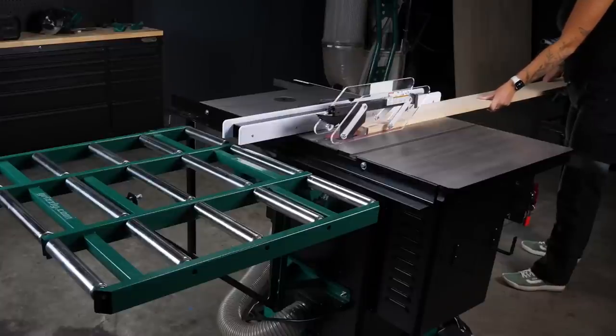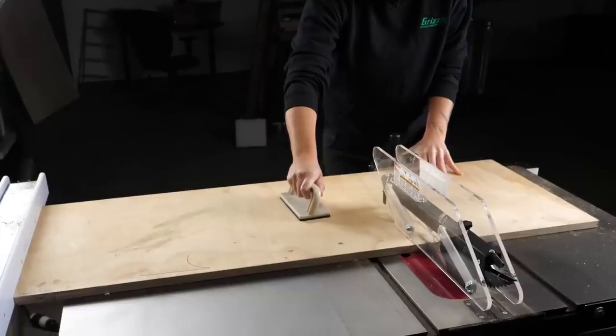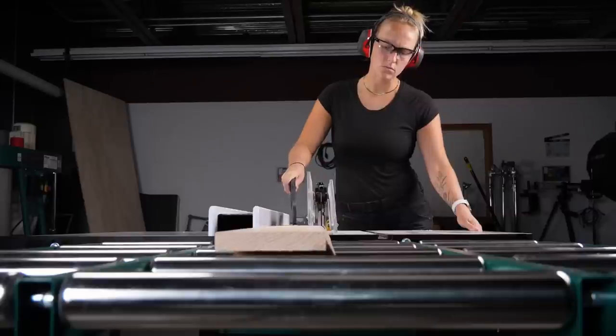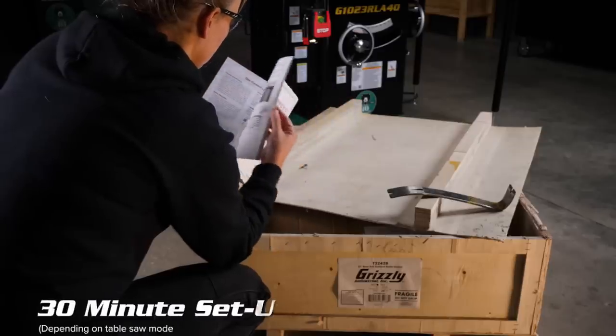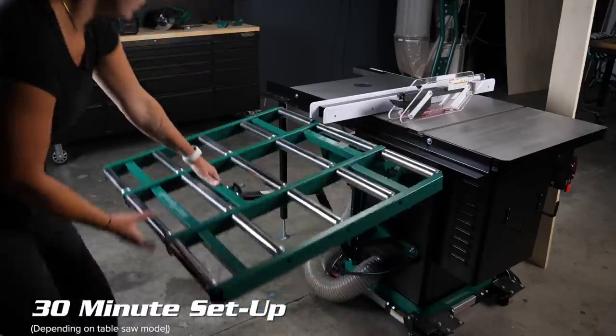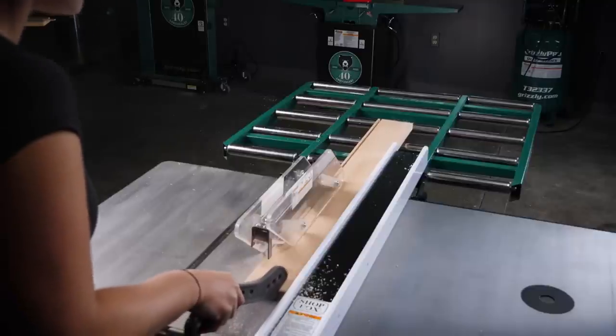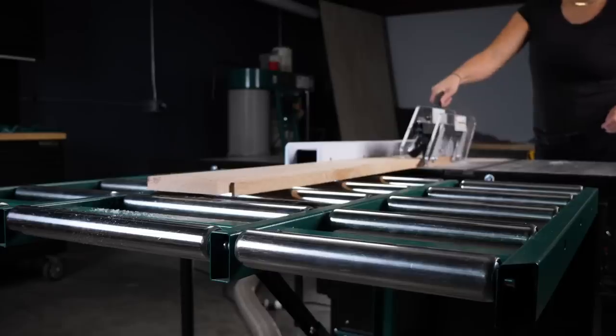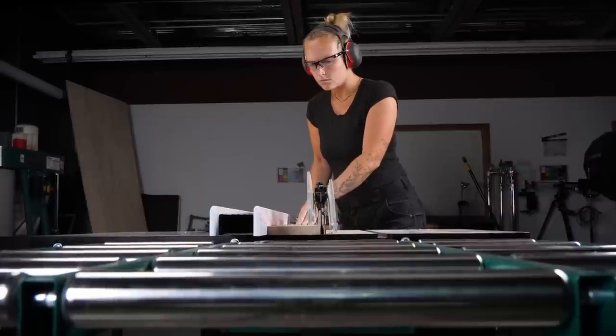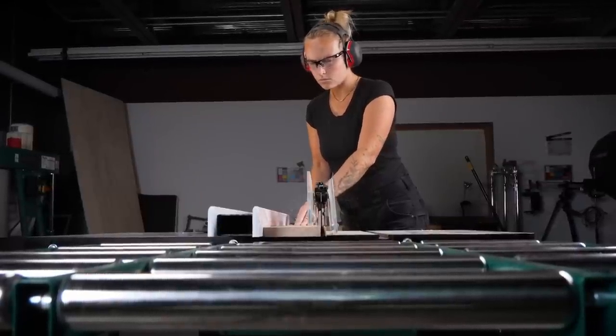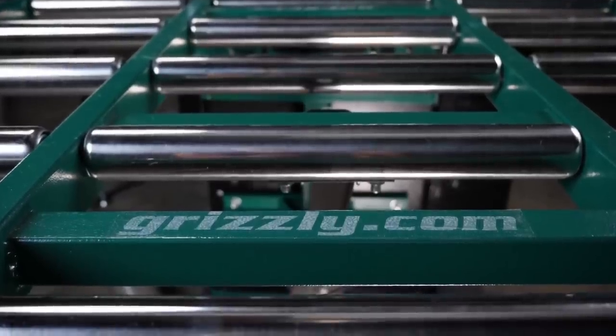Its benefits include preventing kickbacks, providing support for long boards, and improving ripping accuracy. The durable construction ensures its longevity, making it a valuable addition to your table saw setup. With the Grizzly Outfeed Roller System 32428, you can enhance your woodworking experience and work with confidence and precision.